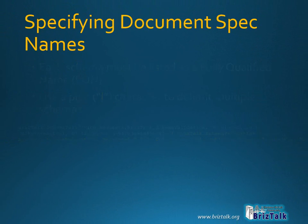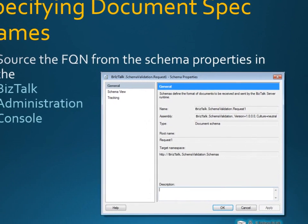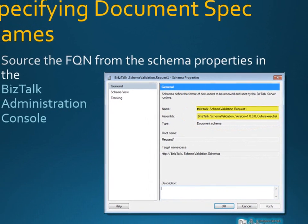The easiest way to get the fully qualified name is to open the schema properties by double-clicking the item in the schemas list under the application. The general page lists both the .NET name and the assembly name for the schema. Just concatenate these two fields with a delimiting comma to get the fully qualified name.